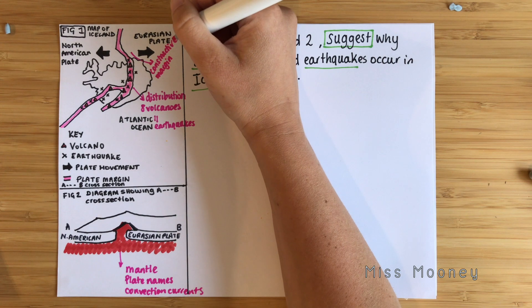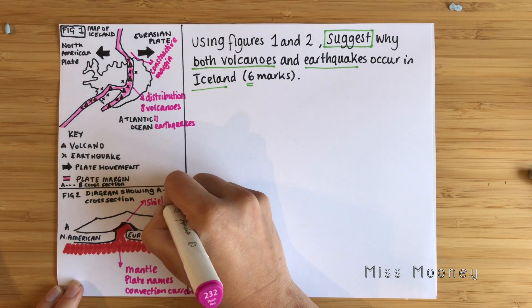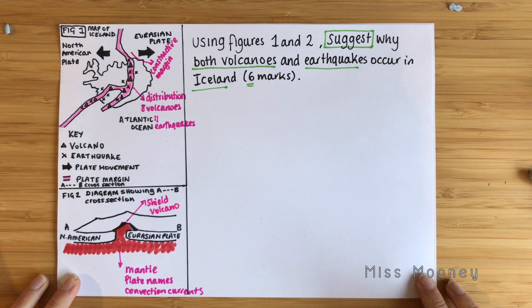The types of volcanoes that occur at constructive plate margins are called shield volcanoes. In figure two we can see this — it shows a low, flat shield volcano. I'm not going to write this exam question out in full, but I will do a very in-depth detailed plan so you can see how you may want to structure your exam answer. In your exam, I wouldn't recommend spending too long on your plan — keep it very brief and quick so you can get onto writing and making the most of those minutes.